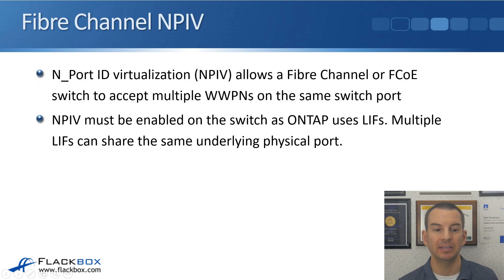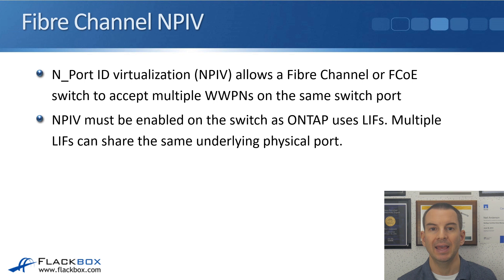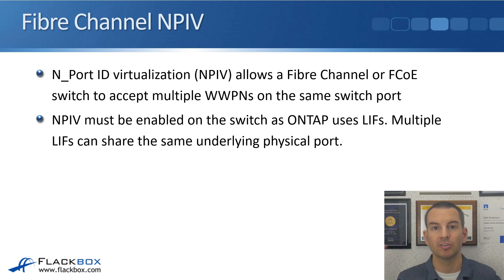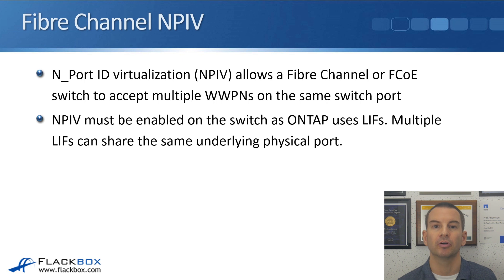Next is NPIV — N-Port ID Virtualization — a technology used on your switches. This allows a Fibre Channel or FCoE switch to accept multiple WWPNs on the same physical switch port. NPIV must be enabled on your Fibre Channel switches when using ONTAP, because ONTAP uses logical interfaces and multiple WWPNs will be reported to the same physical port — both the physical WWPN and the logical WWPN, and potentially multiple LIFs on the same physical port. The Fibre Channel switch needs NPIV enabled to support that.